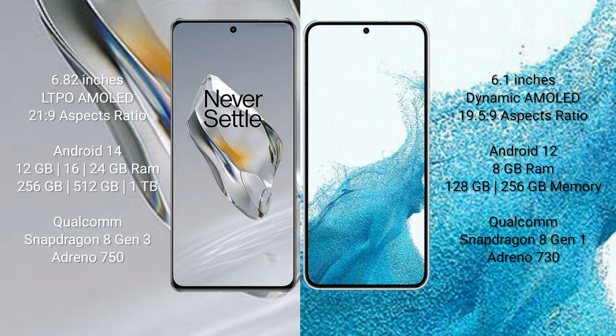OnePlus 12 runs on the Android 14 operating system. Samsung Galaxy S22 runs on the Android 12 operating system. OnePlus 12 comes with 12GB, 16GB, or 24GB RAM and 256GB, 512GB, or 1TB internal storage.